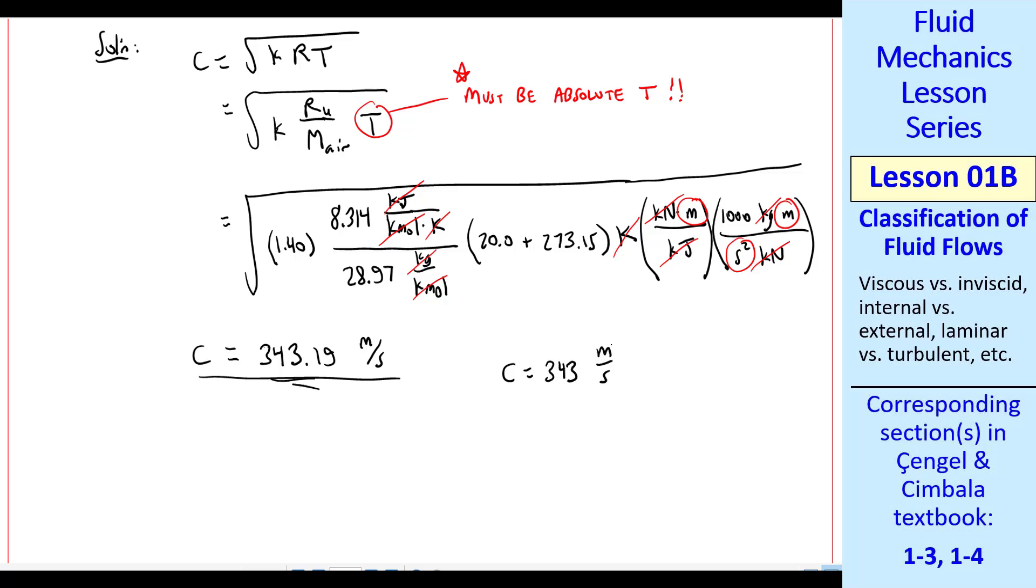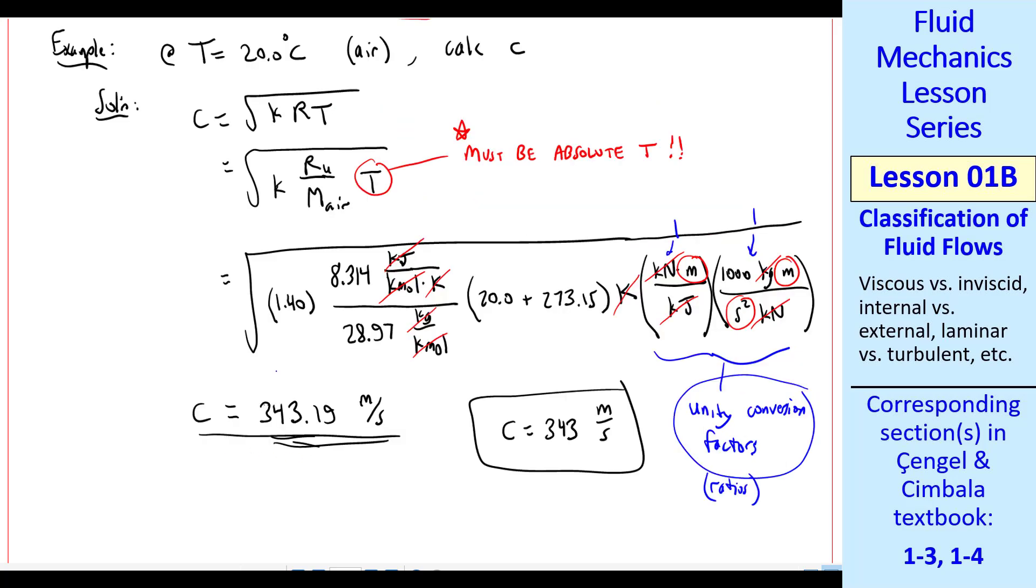Notice that these two are what we call unity or unit conversion factors or ratios. These are by definition 1. That's equal to 1 and that's equal to 1. They're just unit conversions. So you can multiply 1 by anything else in your equation and you don't change it. That's why we call it unity conversion ratios. I would strongly advise you to do your units like I just did here. Not just in this course, but in all of your courses and in all of your life. So that you don't mess up your units. So this is the speed of sound in air at 20 degrees C.